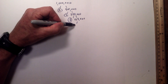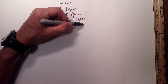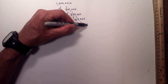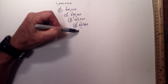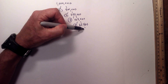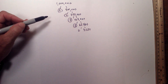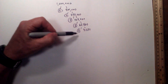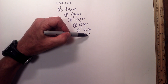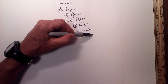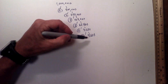Next we have 2 times 62,500 — circle the 2. Next we have 2 times 31,250 — circle the 2. Next we have 2 times 15,625 — circle the 2 because it is prime.